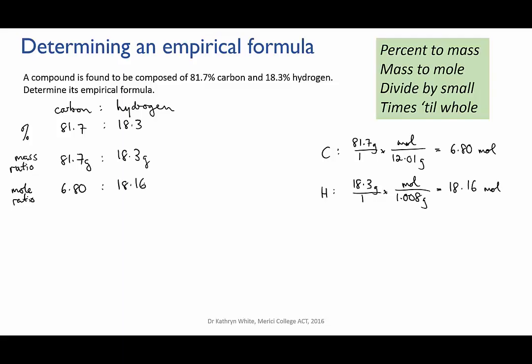So that gives us the mole ratio of carbon to hydrogen. But we still need to get it down to the simplest mole ratio. And that leads us to step number three. How do you simplify a ratio? Well you divide by the lowest common factor. So here we're going to divide through by the smallest of the two numbers. That will give us a ratio of one to something. So we divide through by 6.80 and that simplifies the ratio to 1 to 2.67.